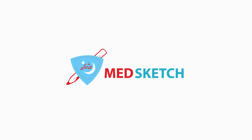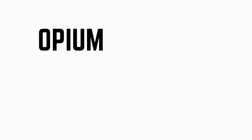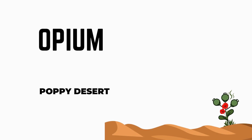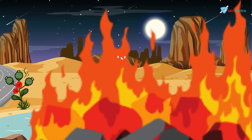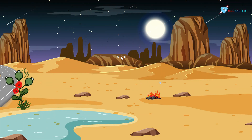Hi everyone, welcome to MedSketch. The toxin of the day is opium. For ease, we have named the scene as poppy desert, as opium is obtained from the poppy plant. Other names are afim, khash-khash, and post.